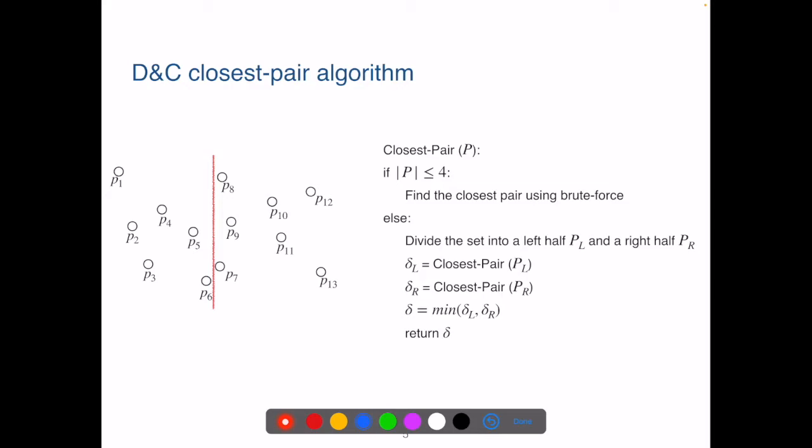As always with the recursive divide and conquer algorithm, we first define the base case using a small value of the problem size, say 4 here. When there are 4 or less points in the graph, we solve the problem directly using brute force algorithm. This only takes a constant time.